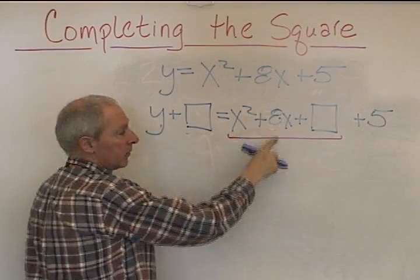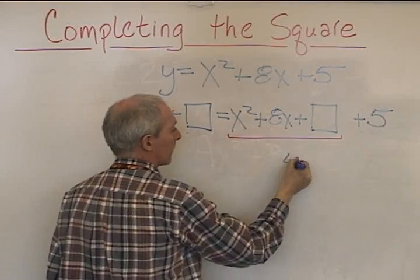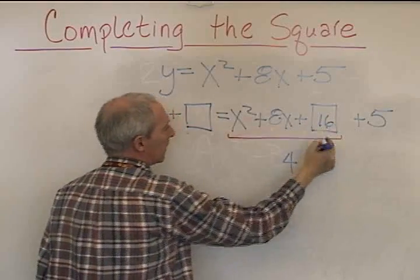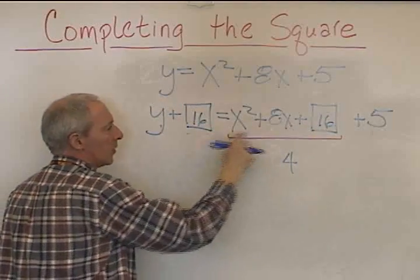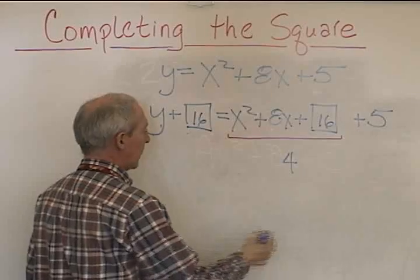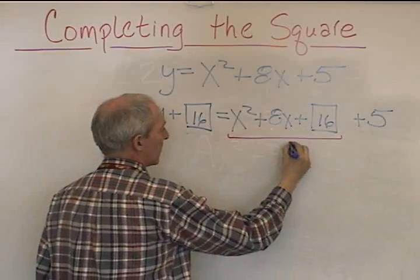Half of 8x is 4. 4 squared is 16. Add 16 to both sides. There's no parentheses to influence this 16. So that's what it is on both sides.